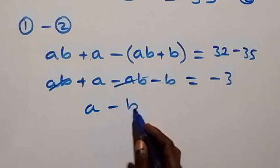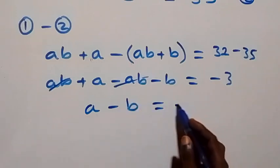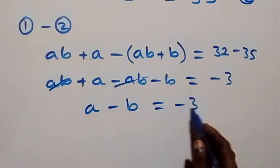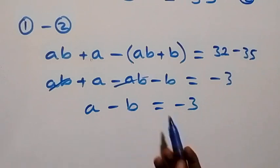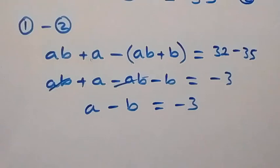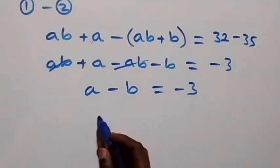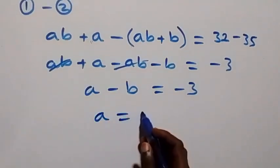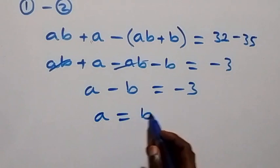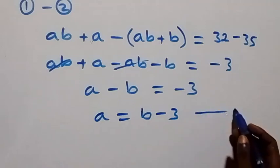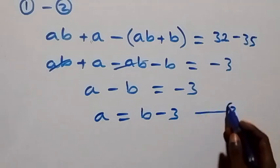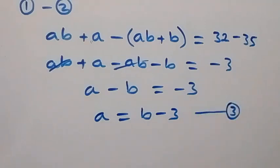The ab terms cancel, so we are left with a minus b equals minus 3. Taking minus b to the other side it becomes plus, so we have a equals b minus 3. Let's call this equation 3.